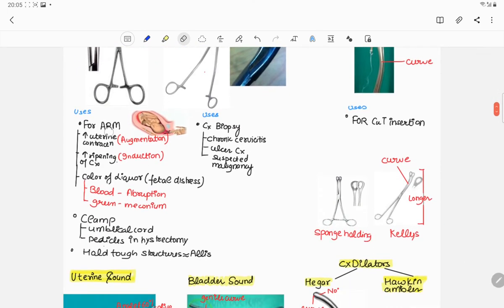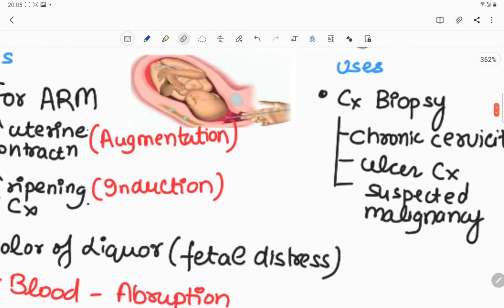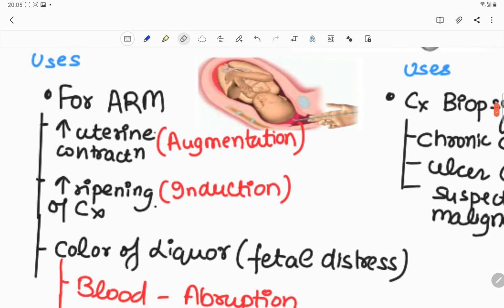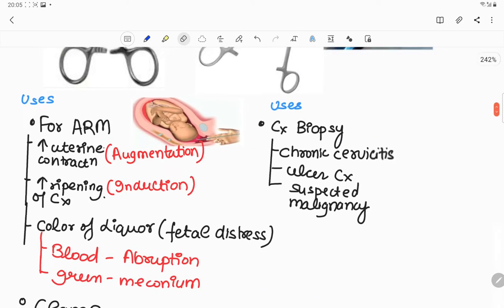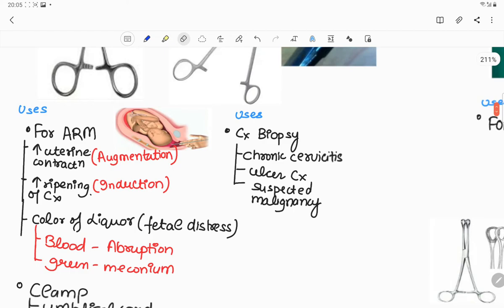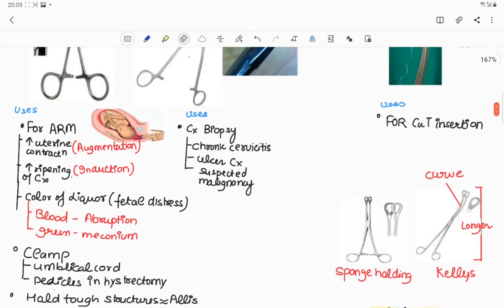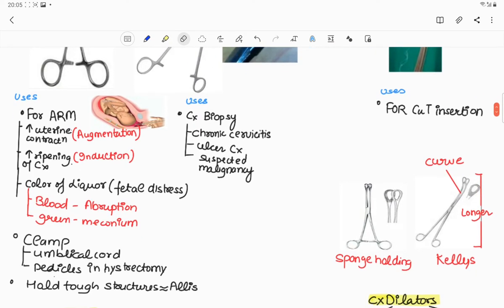Its uses are for artificial rupture of membrane, as you can see in this picture. Artificial rupture of membrane is done to increase uterine contraction called augmentation, for ripening of cervix called induction, to assess the color of liquor, example during fetal distress. Like if bloodstained liquor is there, abruption can be there. If green colored liquor is there, meconium can be there.